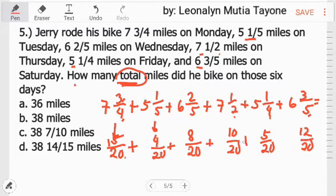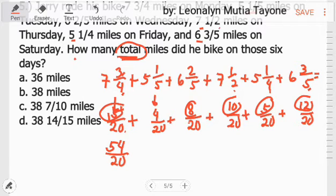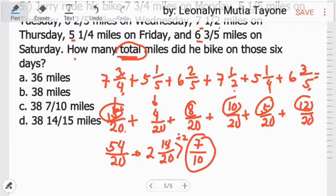Ngayon, pwede na natin i-add ang mga fractions. Kopyahin ang denominator na 20. Pwede na natin i-add ang mga numerators. So, this is 15, 20, 30, 40, 50, 54. So, ito yung fraction natin, 54 over 20. Itong 54 over 20, na improper fraction, gawin natin siyang mixed numbers. 54 divided by 20, ilang 20 is at 54, dalawa. So, ang natitira na lang, 54 minus 40, that is 14 over 20. Itong 14 over 20, para ma-list natin ito, hanapan natin ang greatest common factor. And ang greatest common factor nito ay 2. So, 14 divided by 2 equals 7. 20 divided by 2 equals 10. So, ito na yung fraction natin.